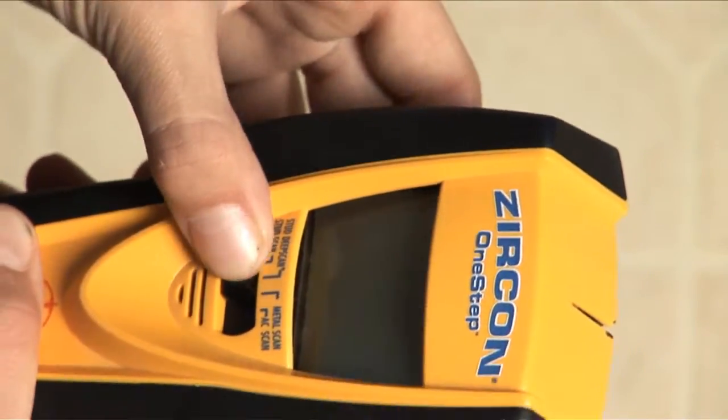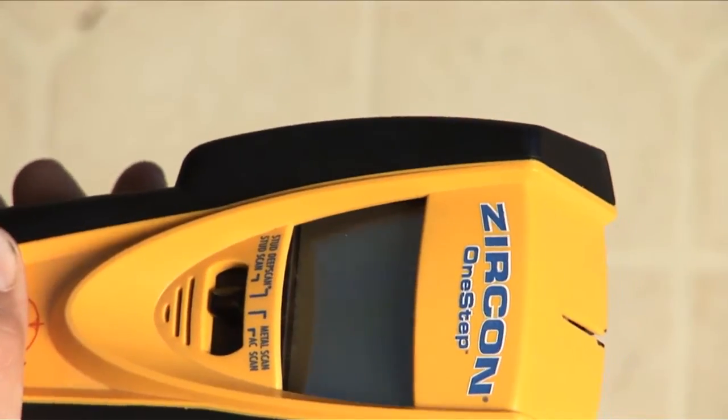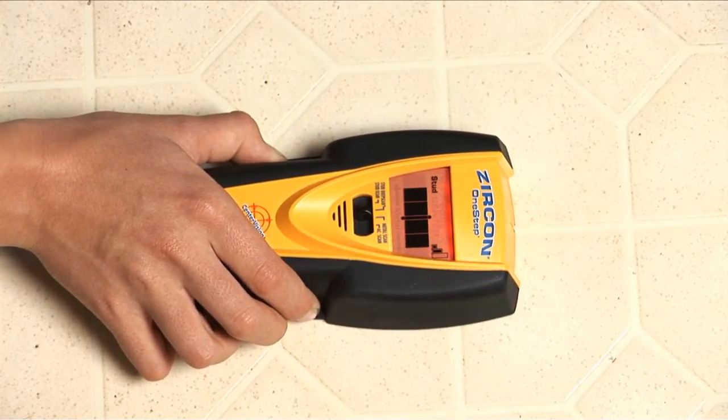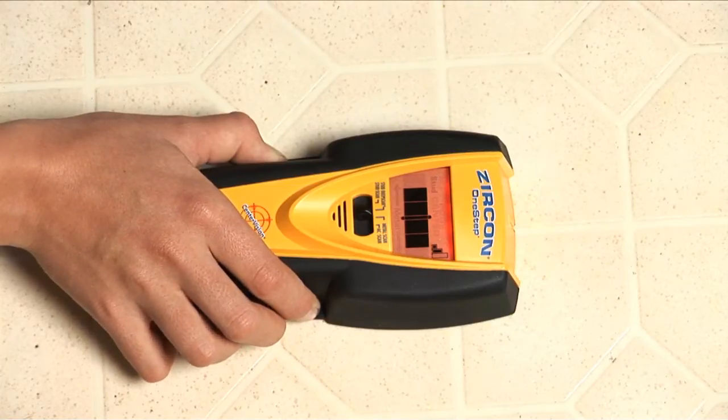Because floors and ceilings have extra layers of material rather than just a sheet of drywall, you normally need a deep scanning stud finder that can scan up to one and a half inches deep.